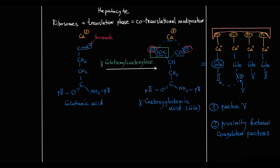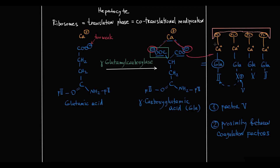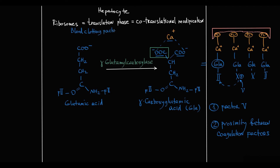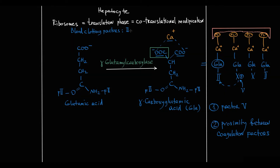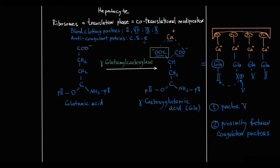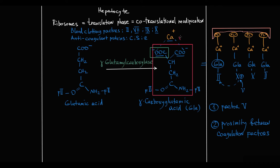Now prothrombin can bind calcium and thereby bind to negatively charged phospholipids on the exposed plasma membrane. There are four blood clotting factors that work in the same manner as prothrombin, requiring gamma-carboxylation and thereby gamma-glutamyl carboxylase for their function: factor 2 (prothrombin), factor 7, factor 9, and factor 10. Additionally, three anticoagulant proteins — protein S, protein C, and protein Z — also require this modification. These coagulation factors and proteins have at their amino terminus typically 9 to 12 glutamic acid side chains, which must be carboxylated in order to make them functionally capable.